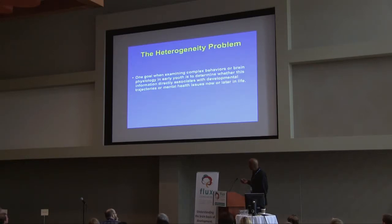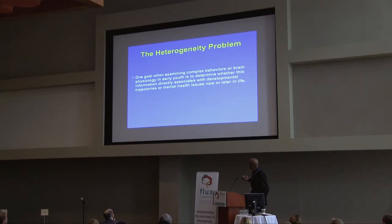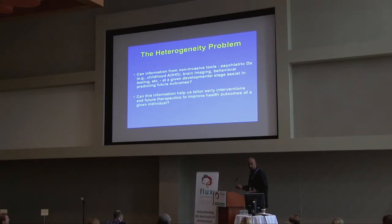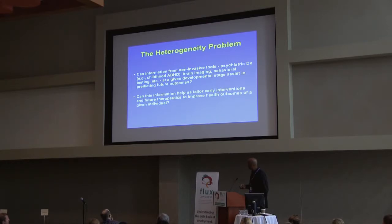So, a question. One goal when examining complex behaviors or brain physiology in early youth is to determine whether this information can directly associate with developmental trajectories or mental health issues now or later in life. In other words, can information from non-invasive tools such as psychiatric diagnoses, brain imaging, behavioral testing, et cetera, at a given developmental stage assist in predicting future outcomes?